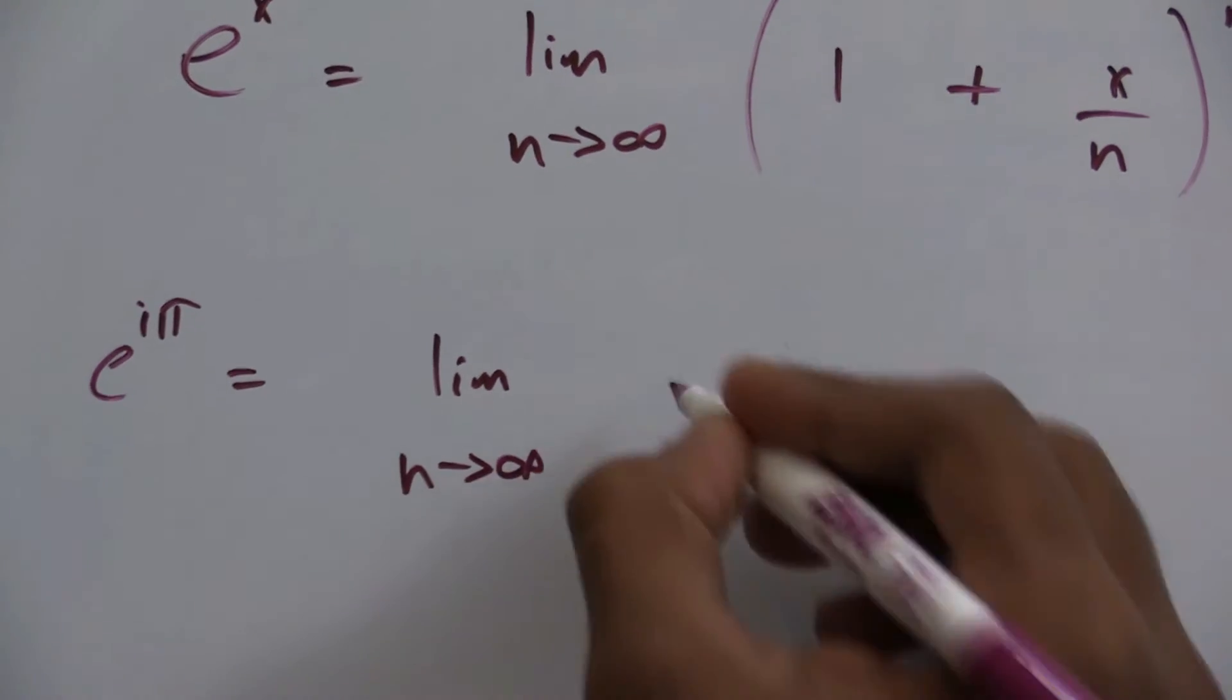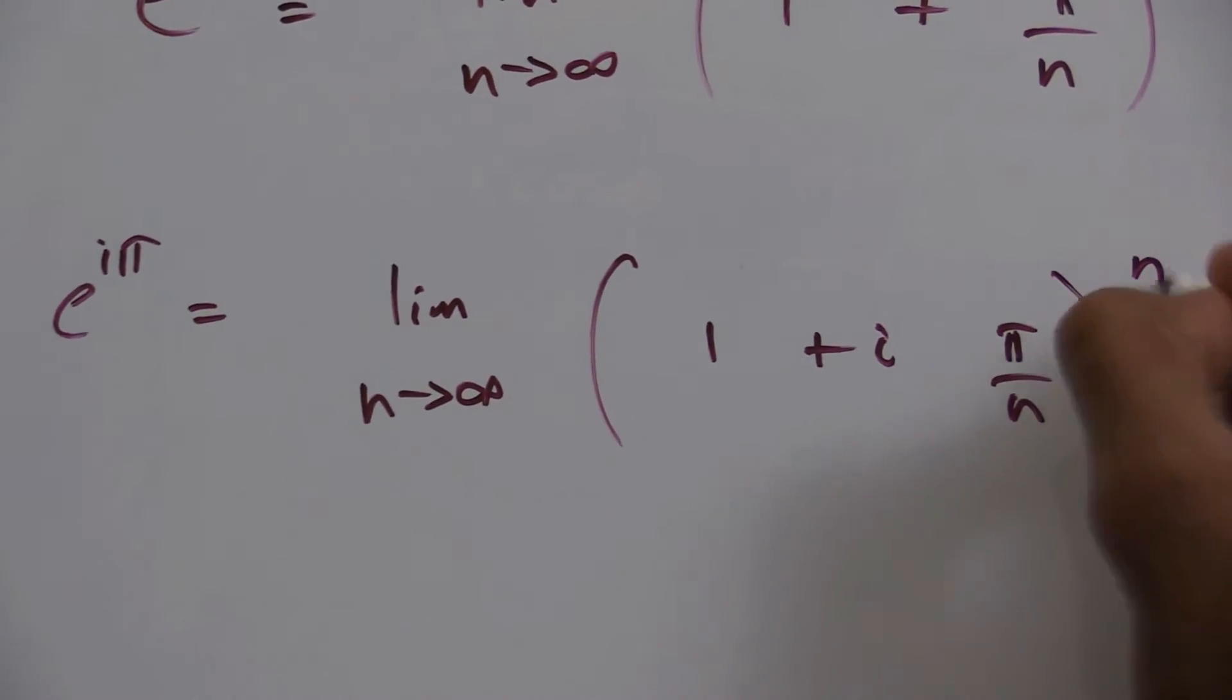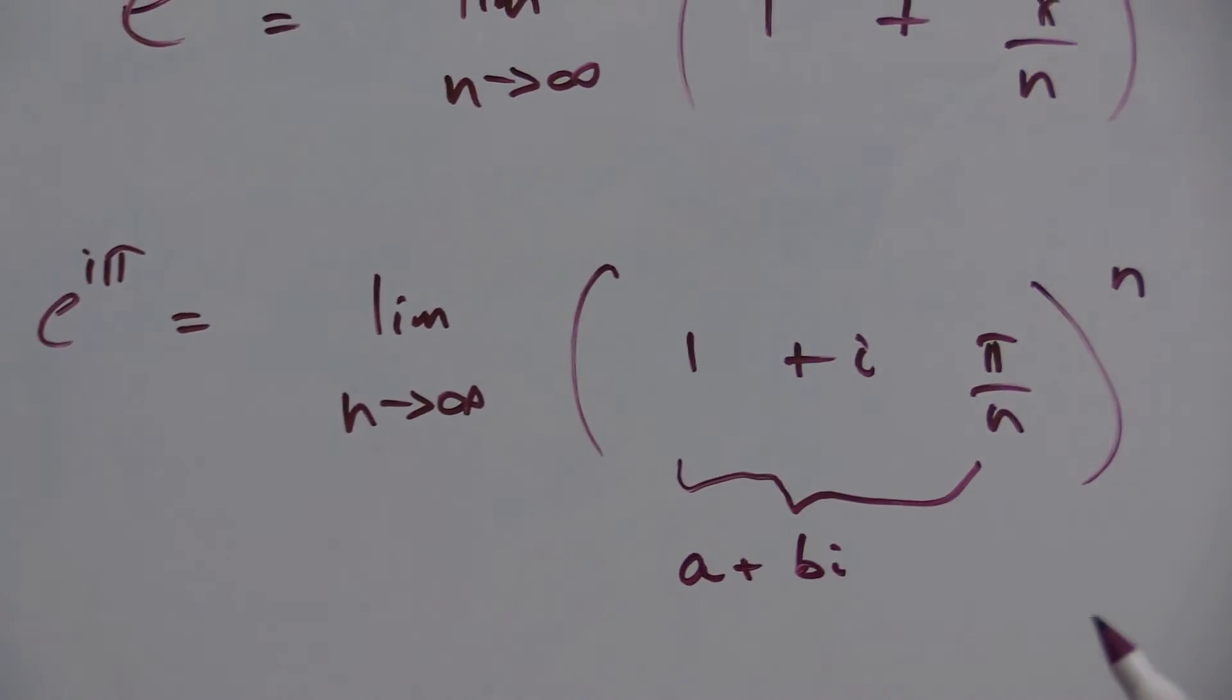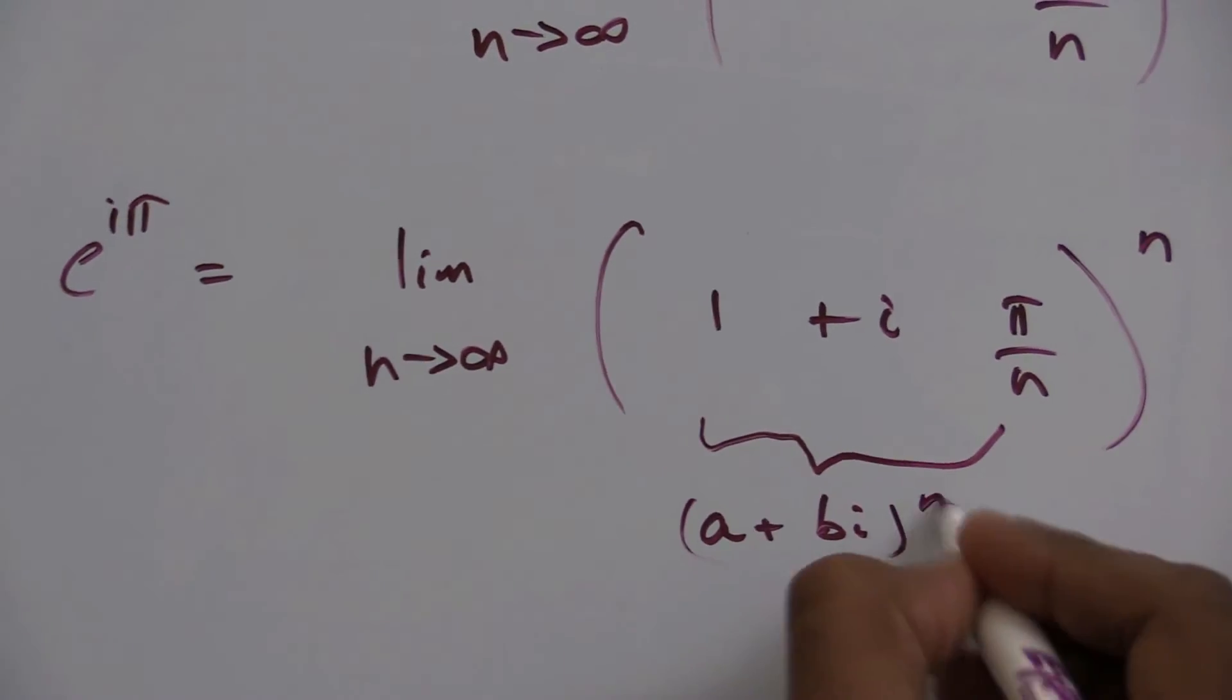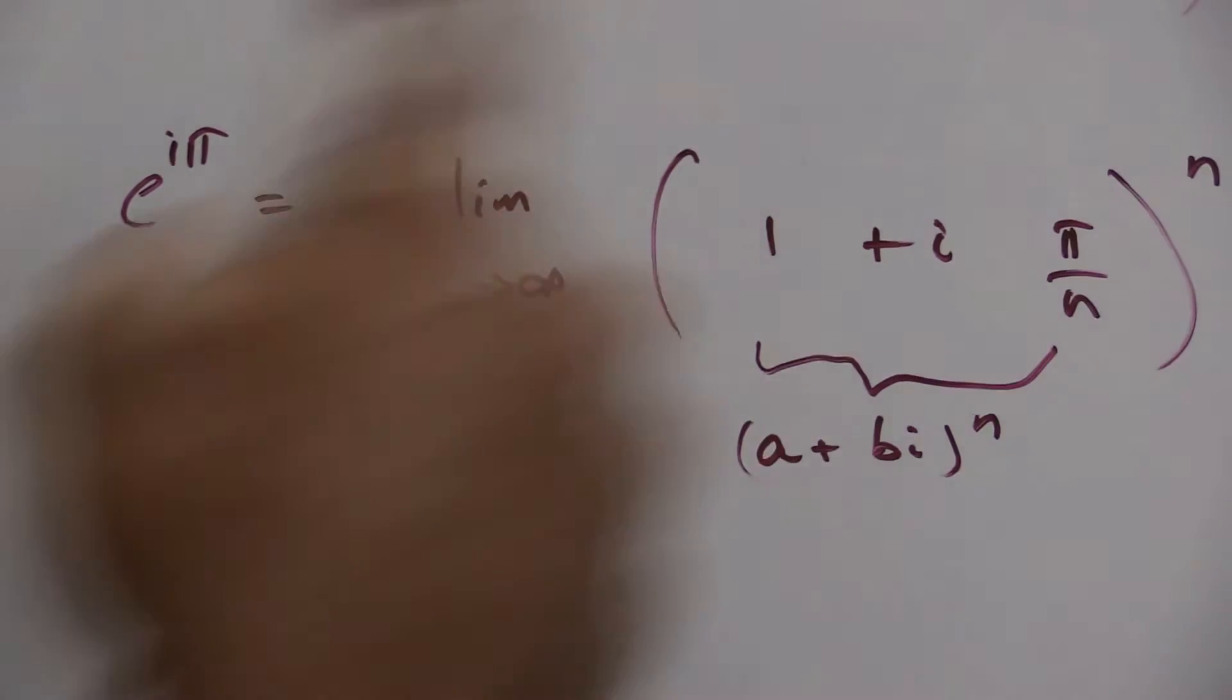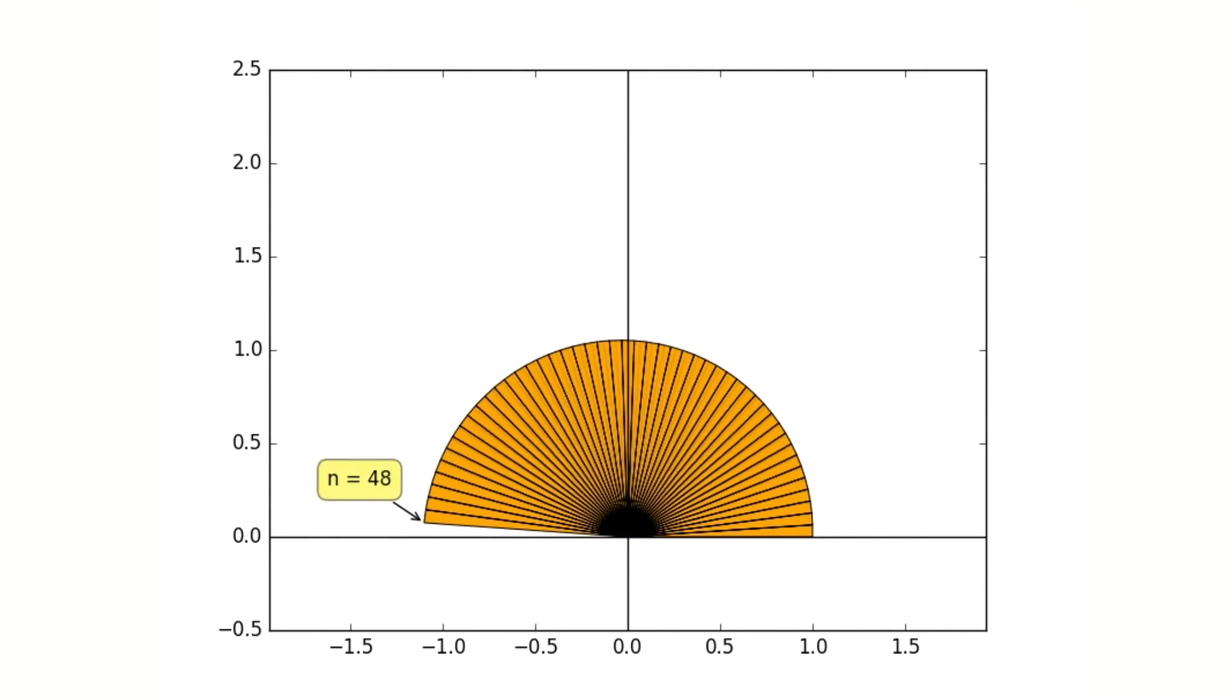In our case, x equals i times π, so I'll substitute that in. Notice this is just an imaginary number. Let's see what it means to raise an imaginary number to the nth power as n gets bigger. When n equals 1 and n equals 2, and as n approaches infinity, you see it gets closer to negative 1.